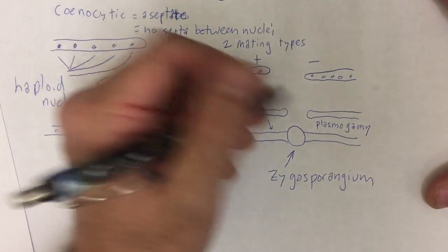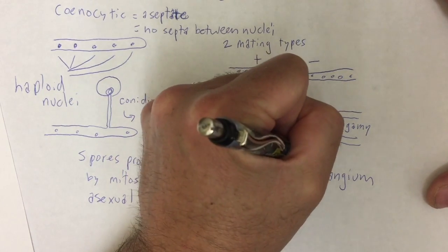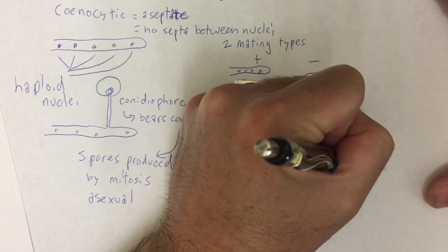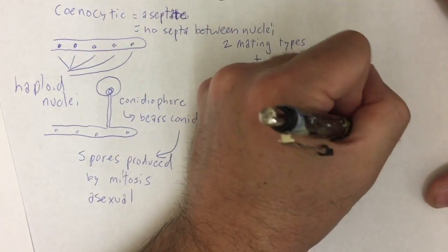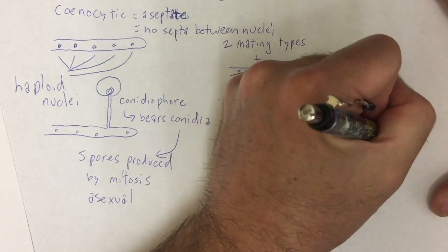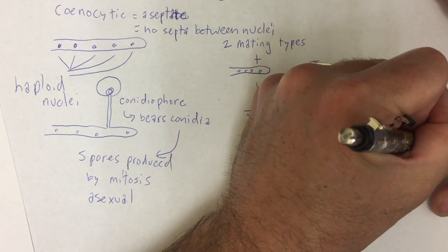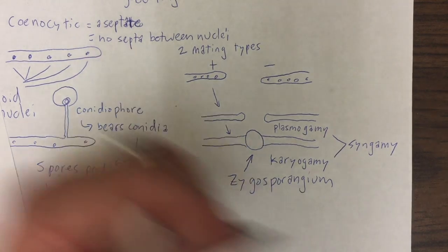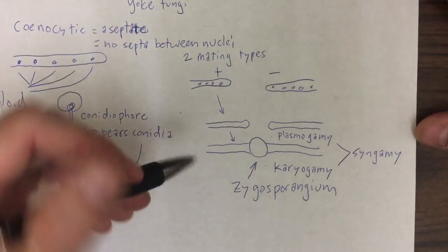And inside of that zygosporangium, you're going to have karyogamy. Remember, plasmogamy and karyogamy are the two parts of fertilization, or syngamy, that often have a temporal delay in fungi. So they don't just ram their cells into each other and have fertilization achieved that way. They may have a little bit of a pause between plasmogamy and karyogamy.